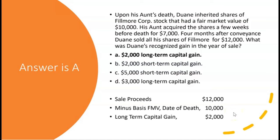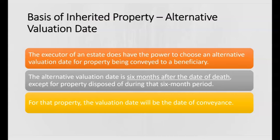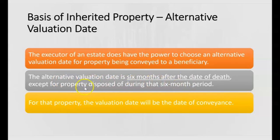So what's the general rule for inherited property? The taxpayer who inherits — the beneficiary — gets a basis equal to the fair market value at the date of death. That's the general rule. But when there's a general rule, there can be an exception. The executor of an estate does have the power to choose an alternate valuation date for property being conveyed to the beneficiary. If chosen, the alternate valuation date is six months after the date of death.